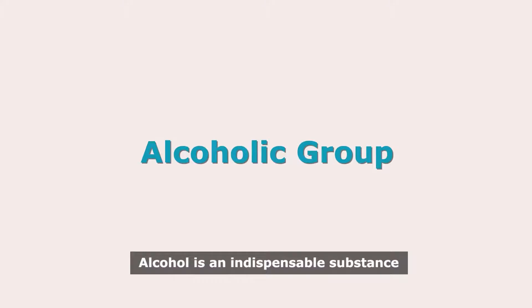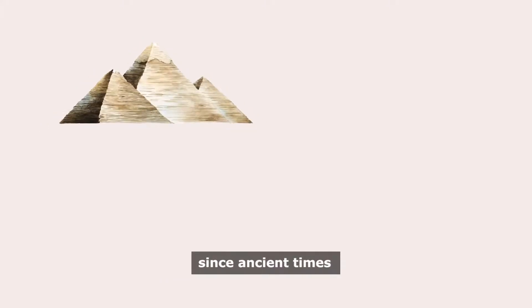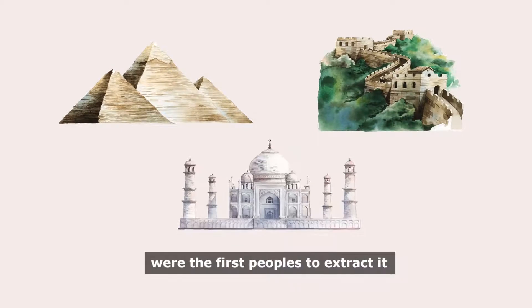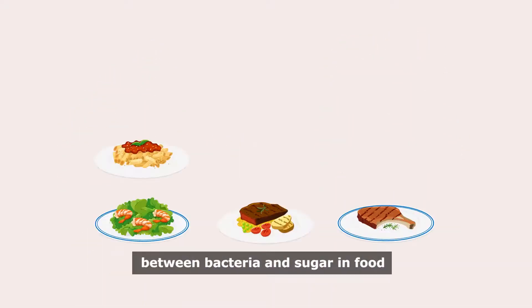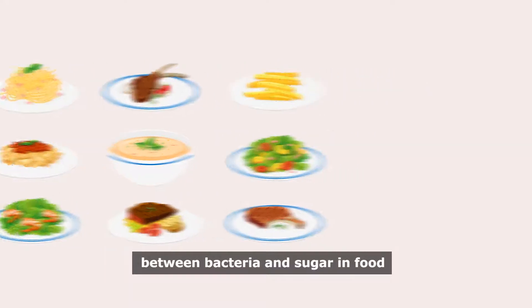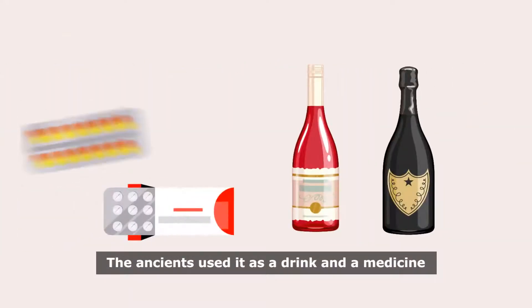Alcohol is an indispensable substance since ancient times. The Egyptians, Chinese, and Indians were the first peoples to extract it. It's the product of the interaction between bacteria and sugar in food. The ancients used it as a drink and a medicine.